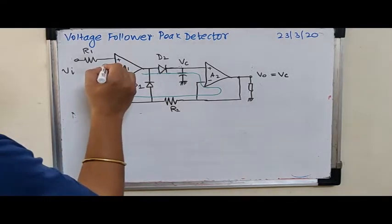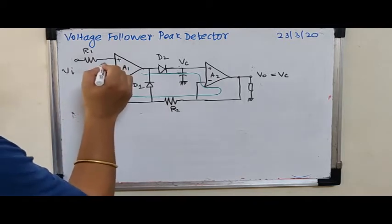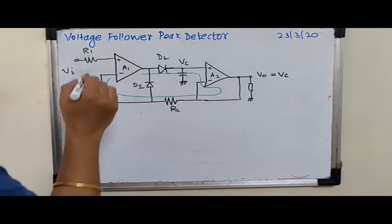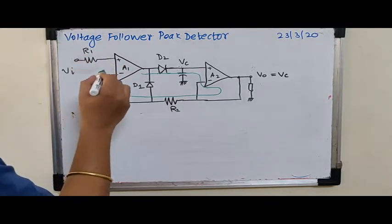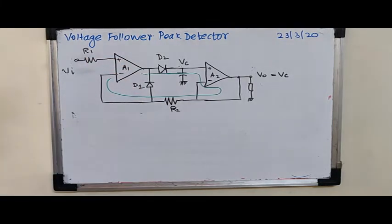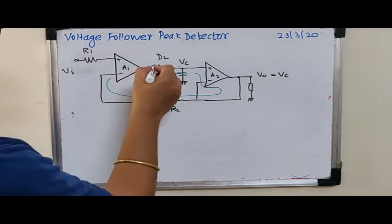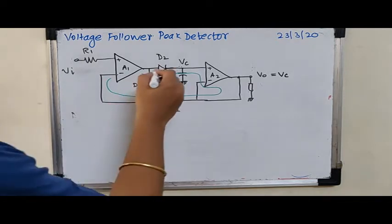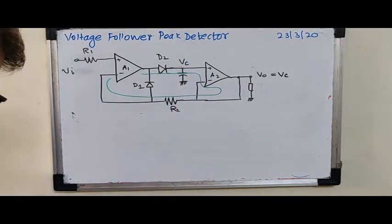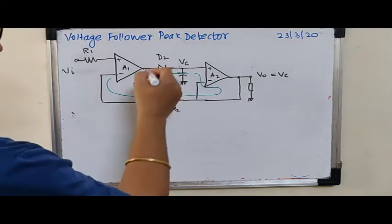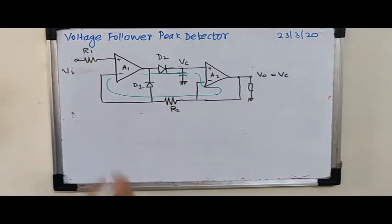in that case the output of A1 is positive, because your input Vi is at a higher potential. The non-inverting terminal is at a higher potential. A1 will follow, whatever is the output will follow Vi, and then the capacitor is charged to Vi. So output of A1 is positive and D2 is forward biased and that is the reason why Vc gets whatever is the value of Vi.